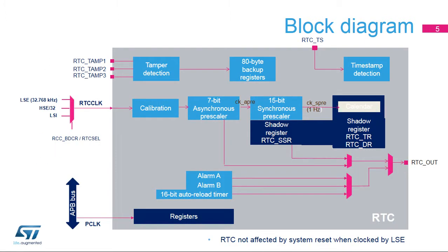Here is the RTC block diagram. The RTC has two clock sources. The RTC clock, or RTC CLK, is used for the RTC timer counter, and the APB clock is used for RTC register read and write accesses. The RTC clock can use either the High Speed External Oscillator, or HSE, divided by a programmable factor from 2 to 63.